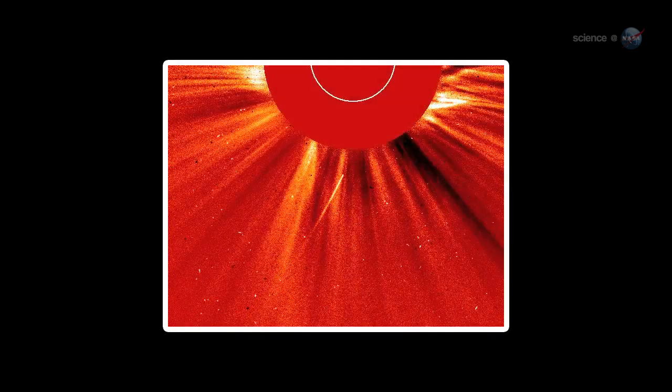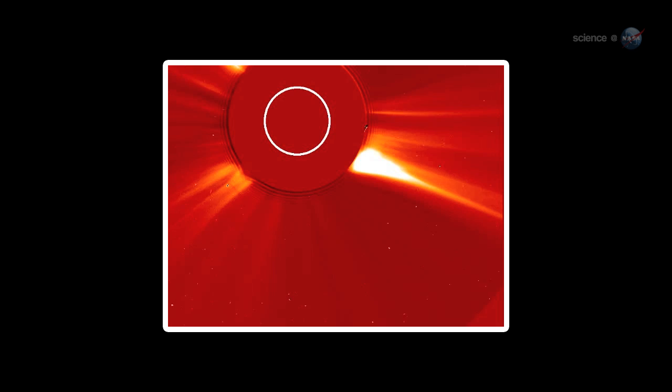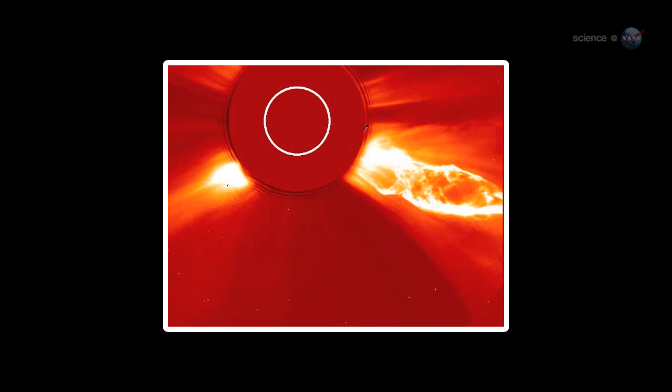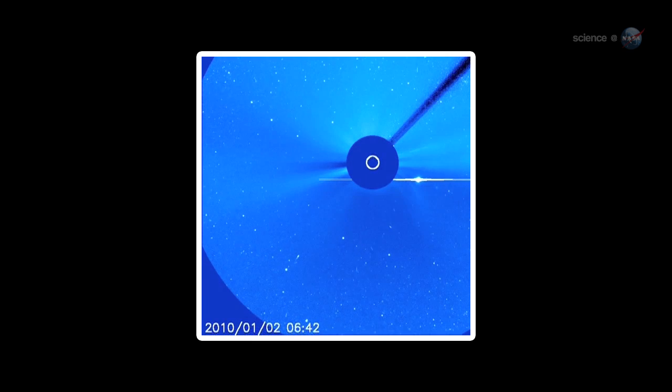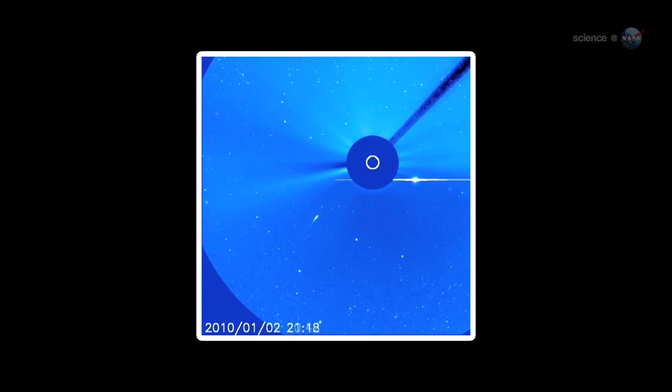Sungrazing comets aren't a new thing. In fact, the Orbiting Solar and Heliospheric Observatory, SOHO, watches one fall toward the Sun and evaporate every few days. These frequent kamikaze comets are thought to be splinters of a giant comet that broke apart hundreds of years ago. Typically, they measure about 10 meters across. Small, fragile, and easily vaporized by solar heat.